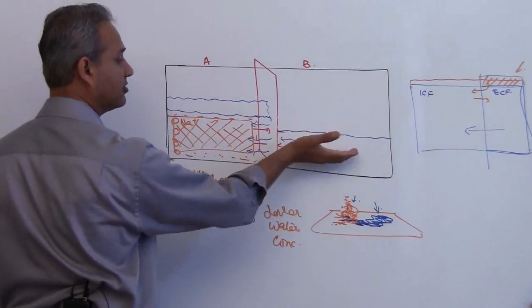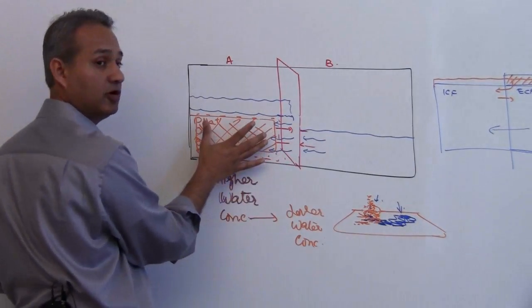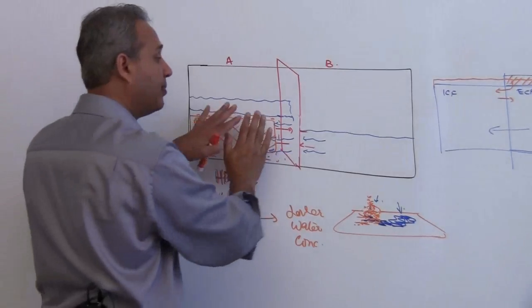When water moves from this side to this side, the water volume here would reduce and the water volume here would increase.